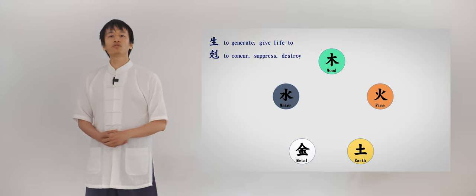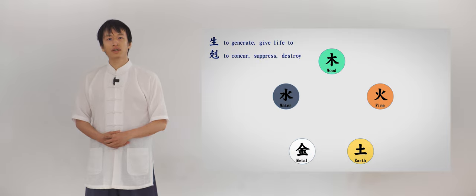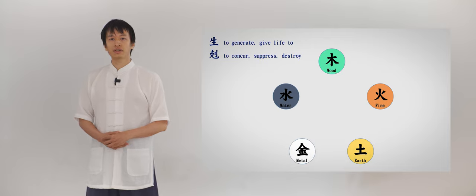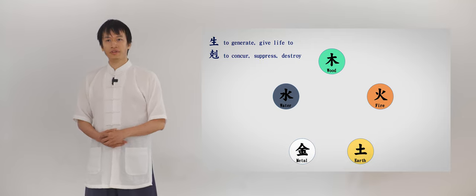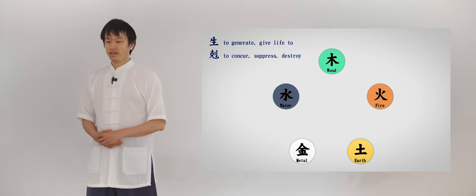There are two very important relations between the five elements or five energies known as shen and ke. Commonly, people refer to the relations as xiang shen and xiang ke. Shen means to generate or to give life to something. And ke is to conquer something, to suppress something or destroy.